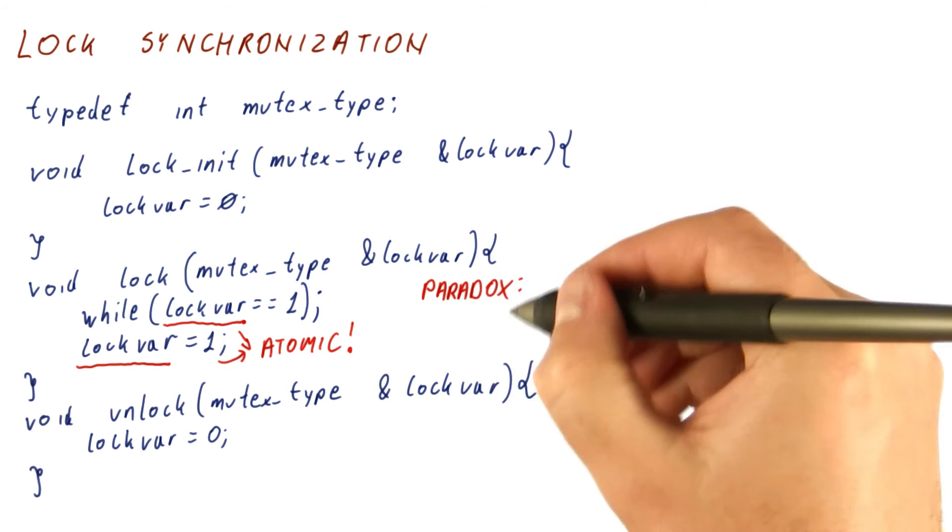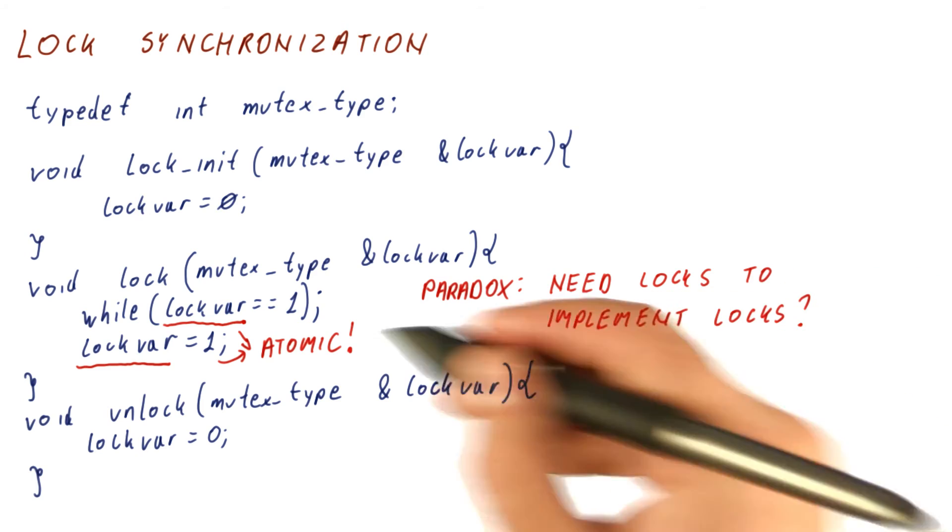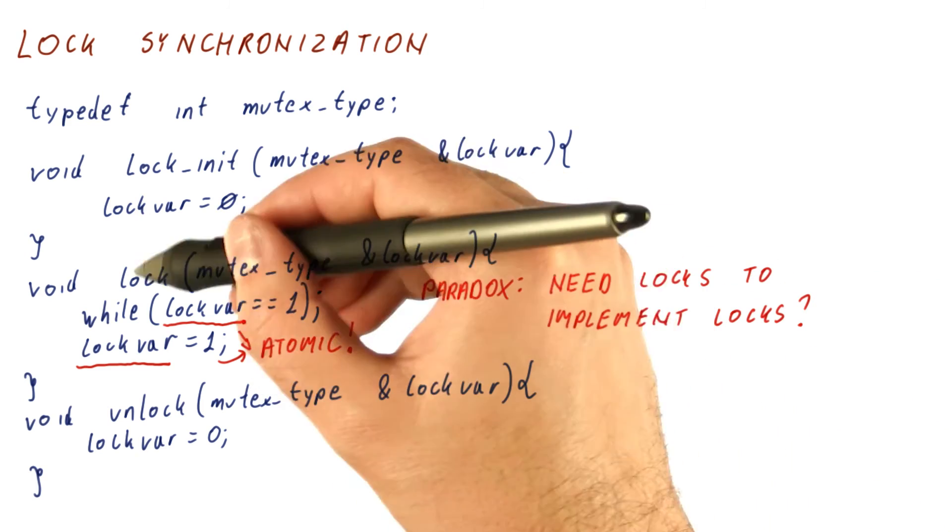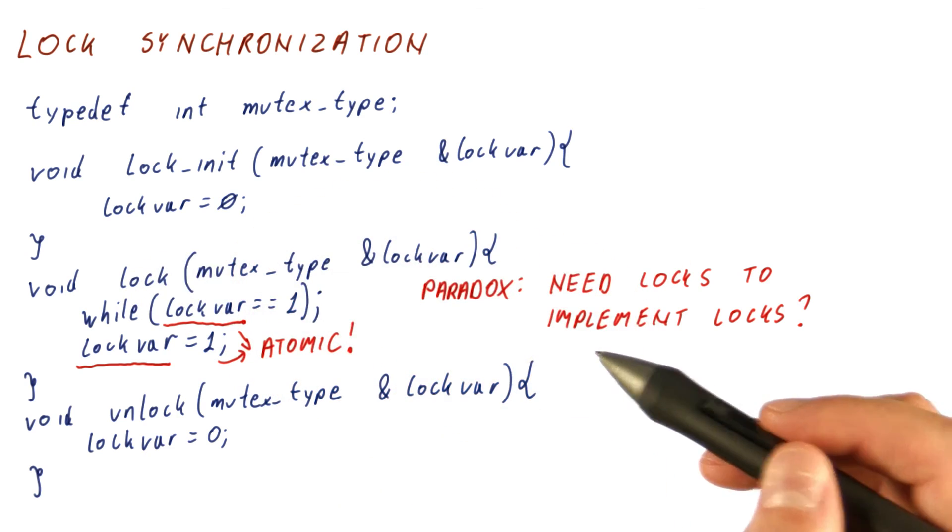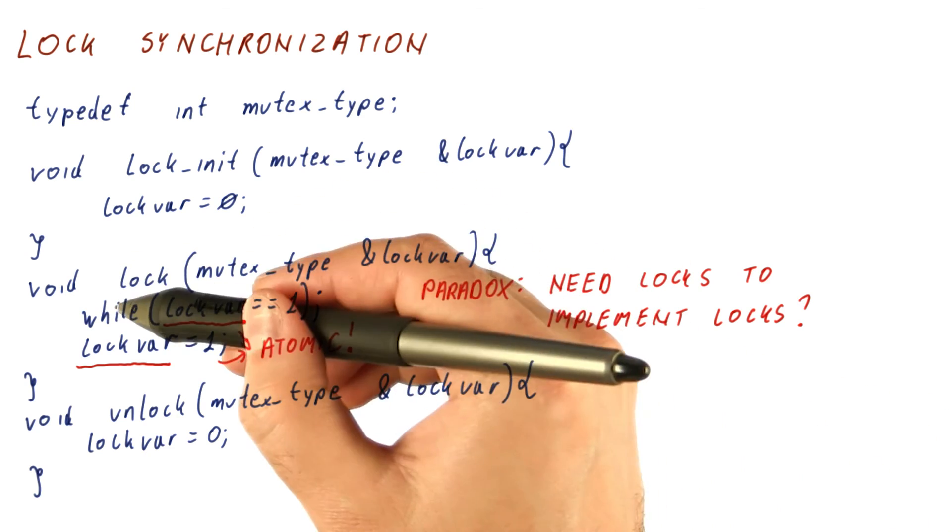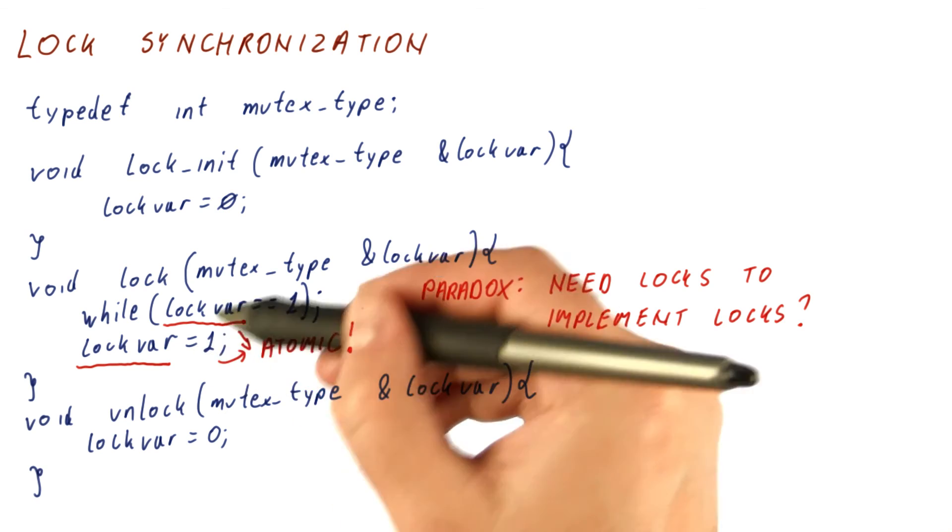So we have some sort of a paradox here, in that we need locks here in order to implement the lock function. So how do we ever support a lock function? Because in order to have a working lock function, we really need to have a lock and then unlock here.